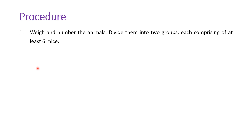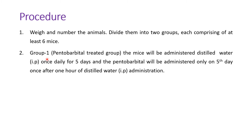Procedure: weigh and number the animals and divide them into two groups, each comprising at least six mice. For Group 1, which is the pentobarbital-treated group, the mice will be administered distilled water intraperitoneally once daily for 5 days, and then pentobarbital will be administered only on the 5th day, once, after 1 hour of distilled water administration.